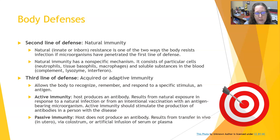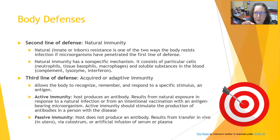The third line of defense is acquired or adaptive immunity. This allows the body to recognize, remember, and respond to a specific stimulus — a specific pathogen or antigen it has seen before — or to mount an appropriate response to a new one. We will expand on this acquired or adaptive immunity. Think of it as a very targeted response, more like a sniper attack versus a broad blitz.